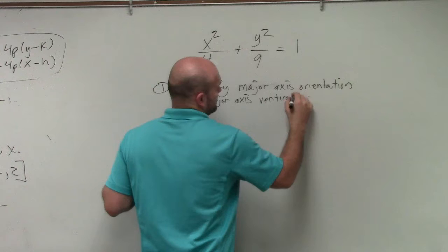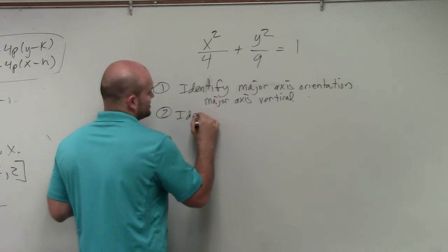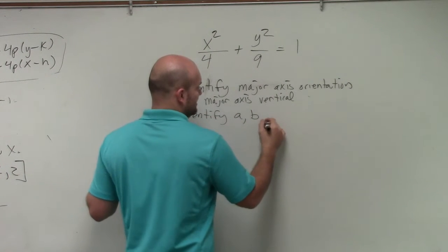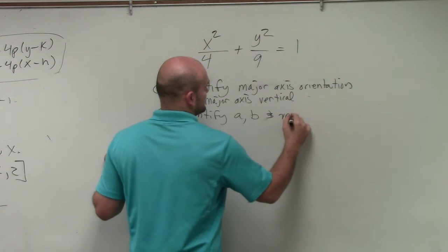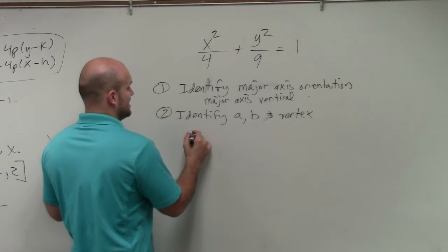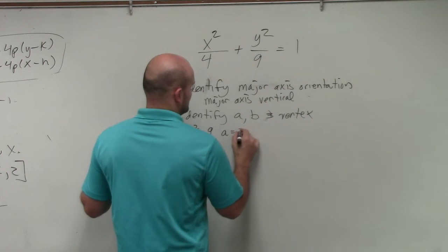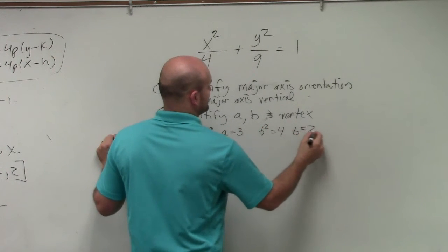Now, you don't really need to write this down, but I think that's very helpful. So therefore, for step number two, which you could really just use as step number one, is to identify your A, B, and vertex. So we could say that A squared is equal to nine, so therefore A is equal to three. B squared is equal to four, so B is equal to two.